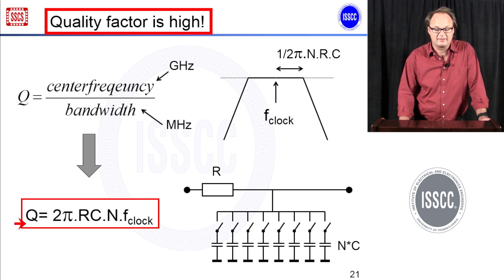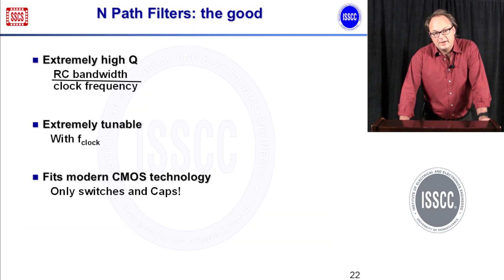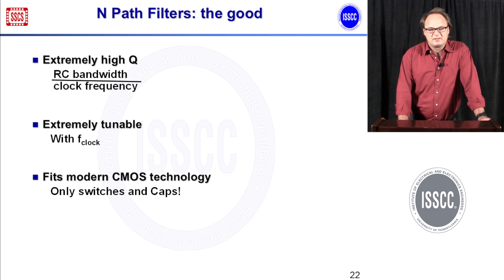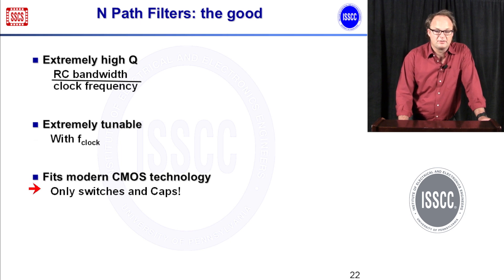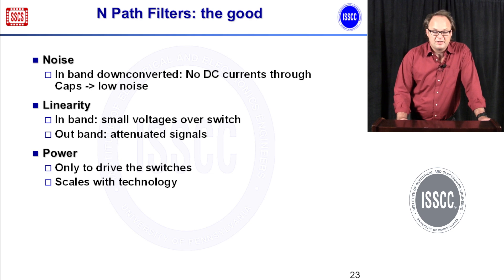The center frequency is dictated by the clock — it can be gigahertz — and the bandwidth of the RC network can be megahertz or even kilohertz. So this way we can make a Q of a thousand without any physical limitation. Filling in the math gives this equation for Q, and you can see if f_clock is big and N is big you can make an incredibly high quality factor. This is quite interesting.